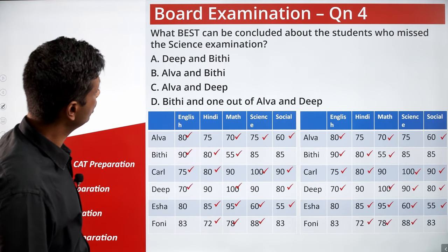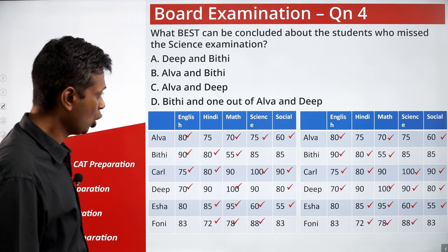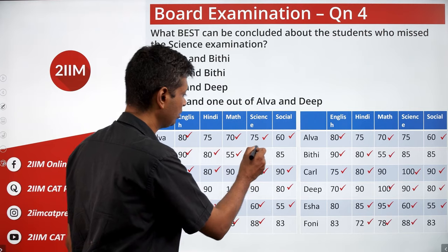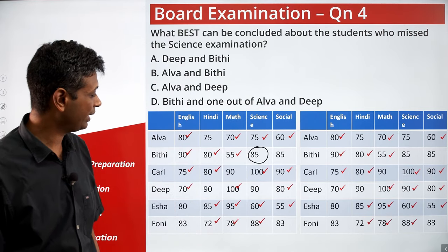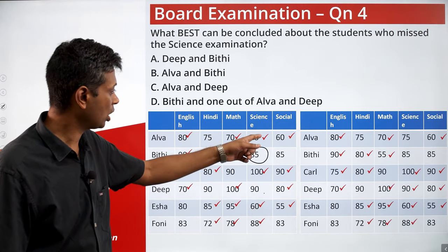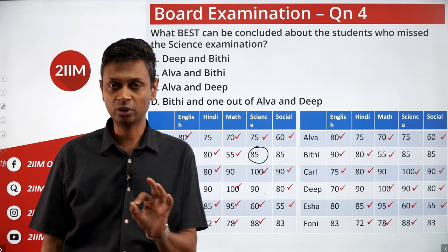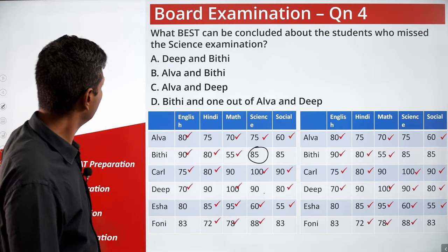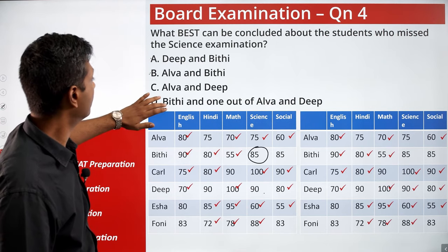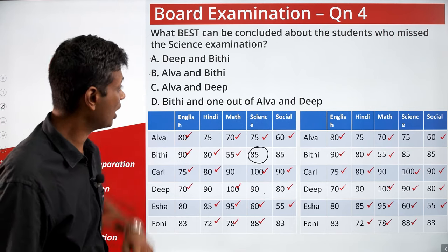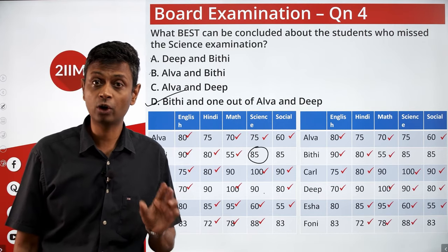What best can be concluded about the students who missed the Science exam? We know for sure that Biti missed Science. We also know it could have been either Deep or Alba. So the possibilities are Biti and Alba, or Biti and Deep. The best conclusion is: Biti and one of Alba or Deep — either Biti and Alba, or Biti and Deep.